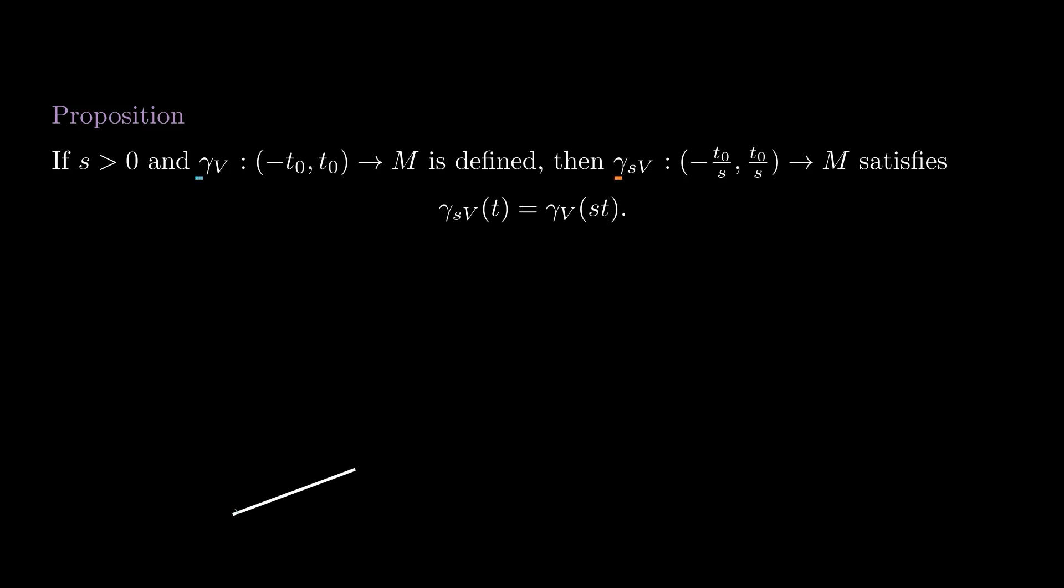This means that if we change the speed in which we travel along a geodesic, it remains a geodesic as long as we travel by constant speed. To prove that, let alpha be the curve gamma v of st. We will show that alpha equals gamma sv by proving that it is a geodesic. By the classic chain rule, alpha prime equals s times gamma v prime at time st.